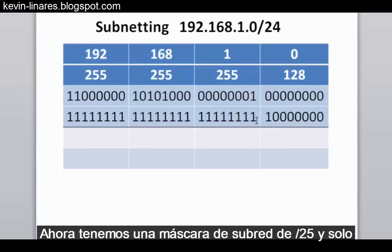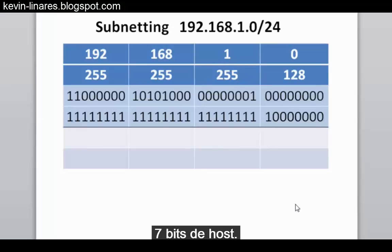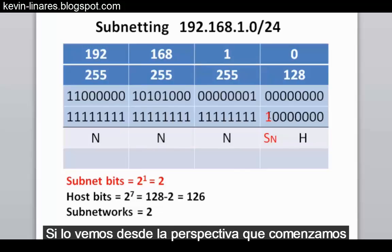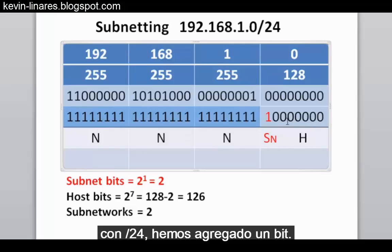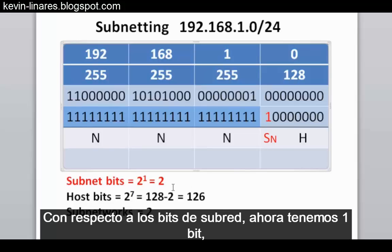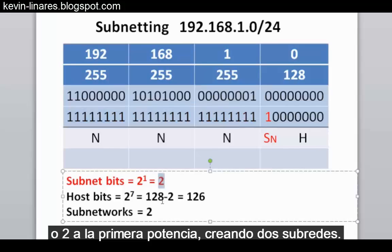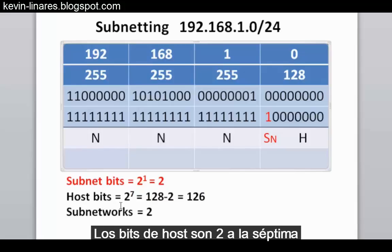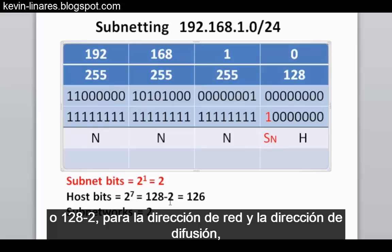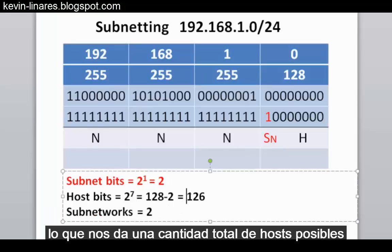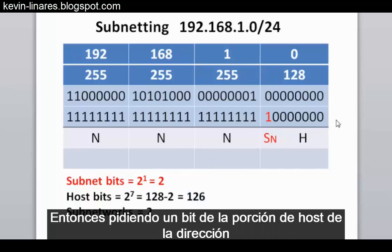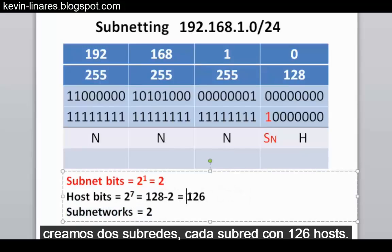We now have a slash 25 subnet mask with only seven host bits. Starting from a slash 24, we've borrowed one bit from the host portion — we call this a subnet bit. With one subnet bit, we have two to the first power, creating two subnetworks. For host bits, we have seven zeros: two to the seventh power is 128, minus two for the network address and broadcast address, leaving 126 usable hosts per subnet. By borrowing one bit, we create two subnetworks each with 126 hosts.